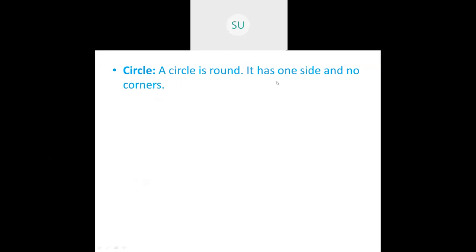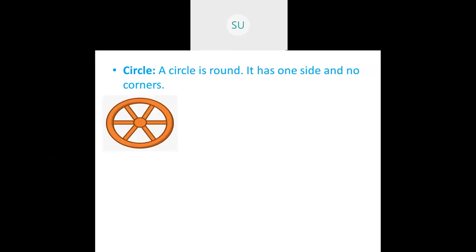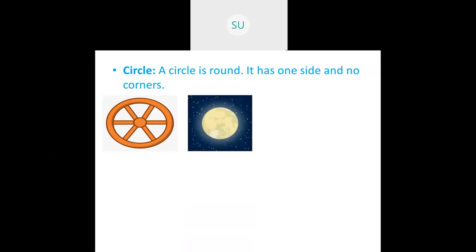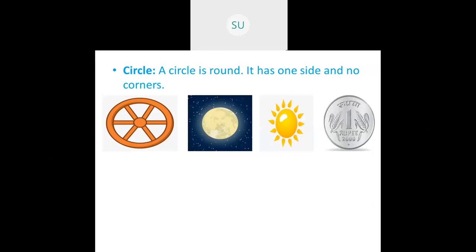A circle is round — it has one side and no corners. It is not straight. The one side it has is the round curved side. Examples of circles you see every day: a wheel, tires of cars and motorcycles, the full moon, the sun, and coins like one rupee, two rupees, five rupees — all are circular in shape.